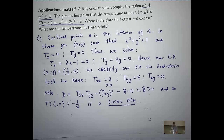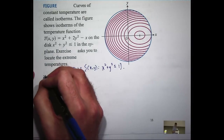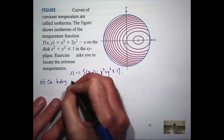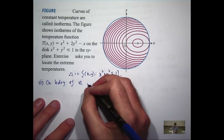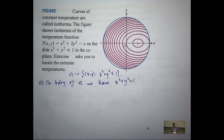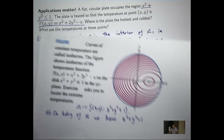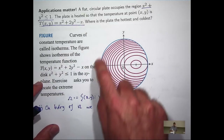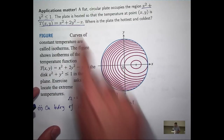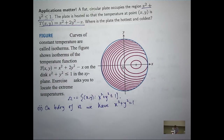So that's in the interior of our plate. What happens on the boundary? This is part two. On the boundary, the curve satisfied is just x squared plus y squared equals one. So what I'm going to do is look at the temperature function along the boundary. I'm going to break it down into two parts: the top part of the circle and the bottom part of the circle, because along those curves y is a function of x.